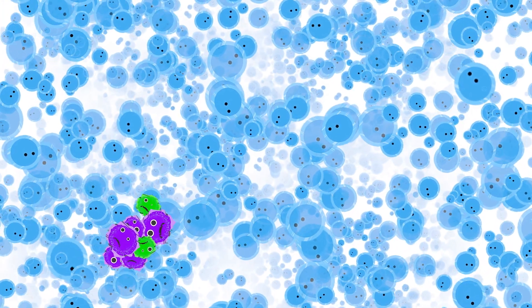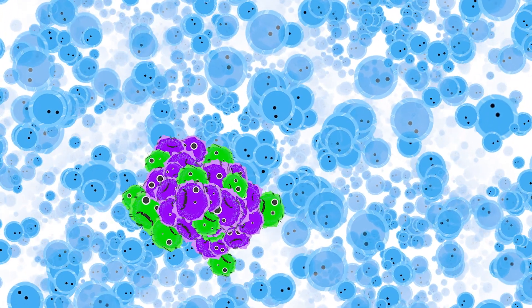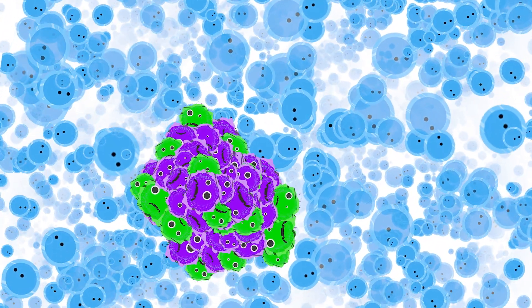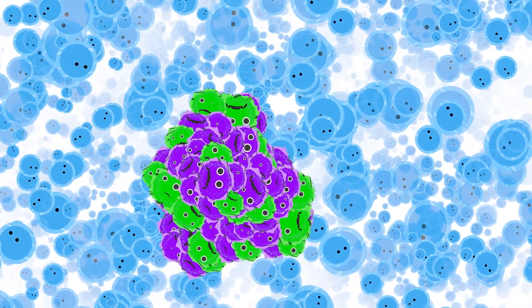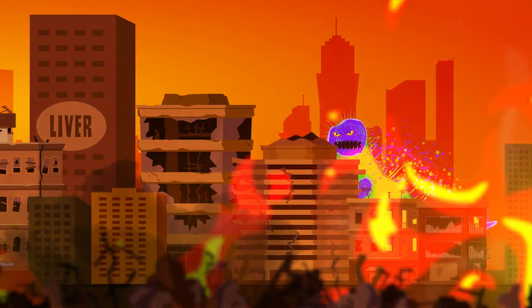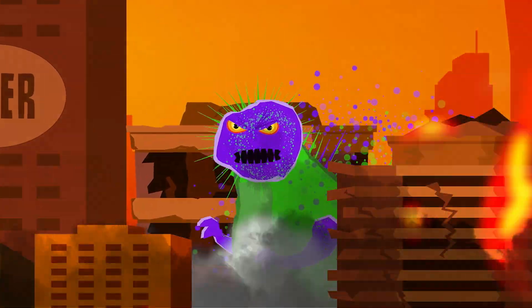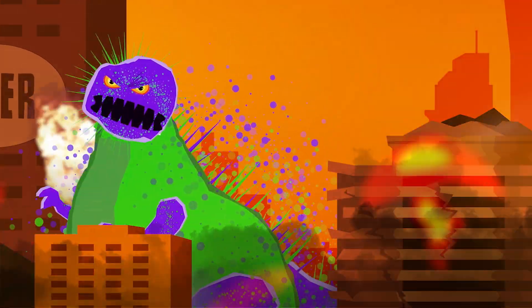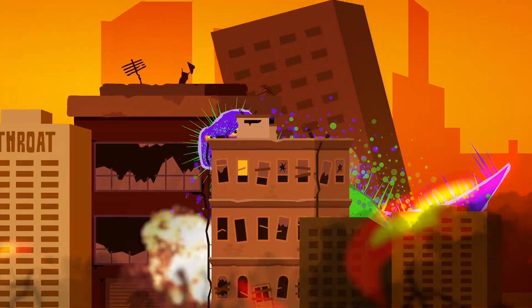Eventually, new mutations allow the cells to break even more rules. The tumor continues to grow in size and aggression until it is no longer a collection of misfit, rule-breaking cells, but a monstrous mass, intent on destroying everything in its wake. The tumor now operates as its own organism.